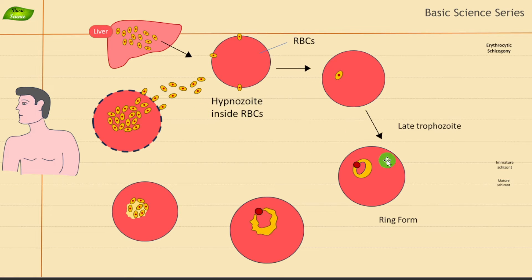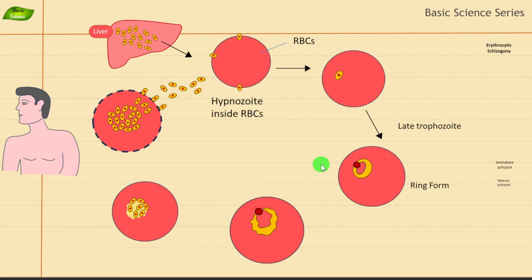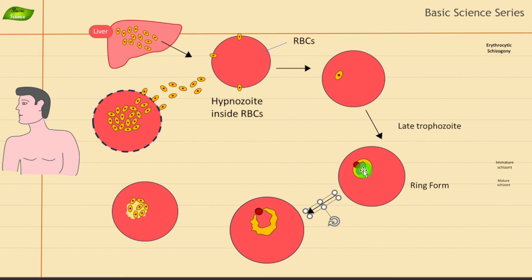Release of merozoites causes complications like fever and other related complications. In the erythrocytic stage, the ring form is getting formed. Then an amoeboid-shaped structure gets formed inside the RBC. Once the merozoite is inside the RBC it develops into the trophozoite stage. At this stage it is able to metabolize hemoglobin, which is the primary nutrient source for the parasite.